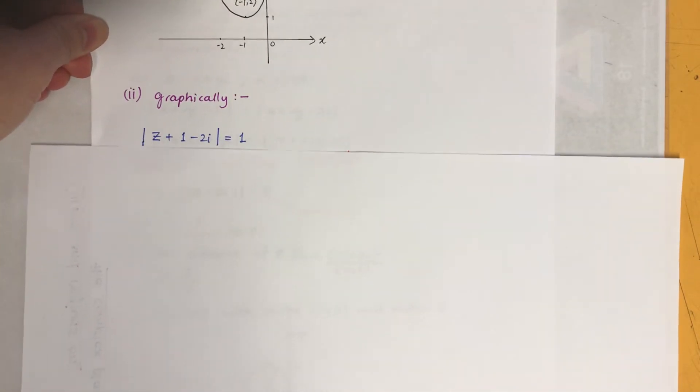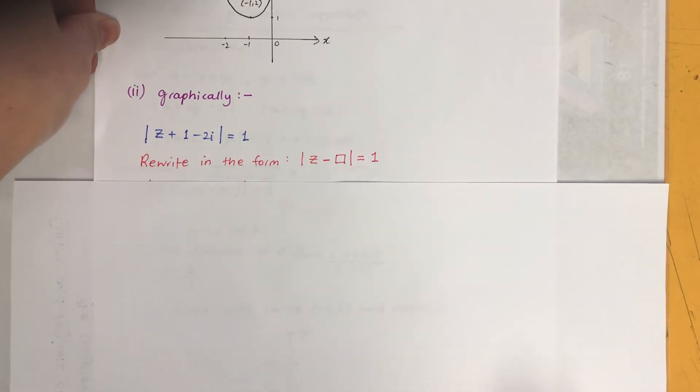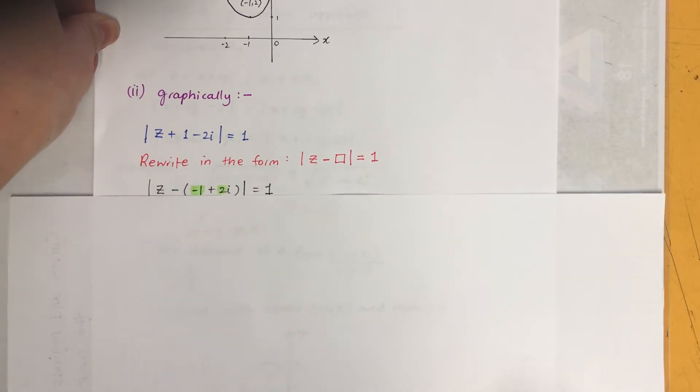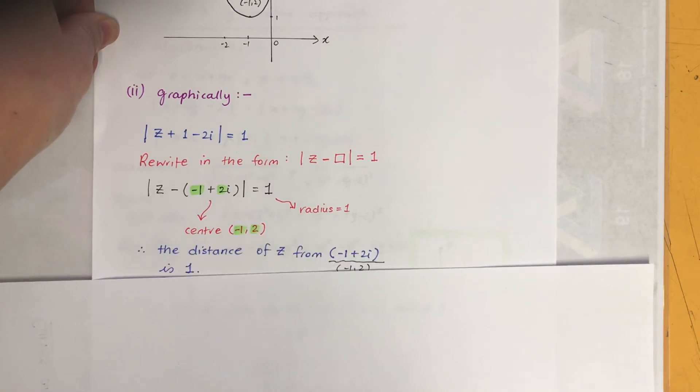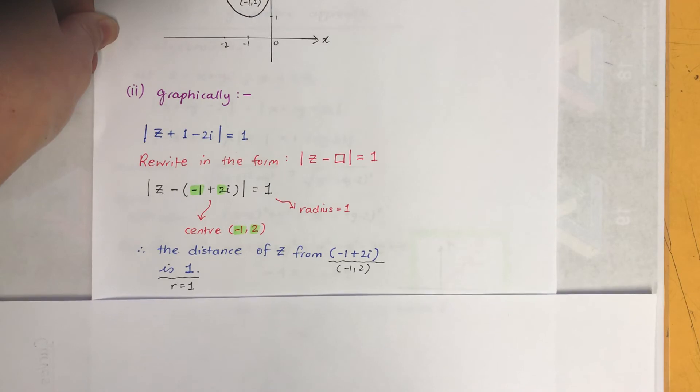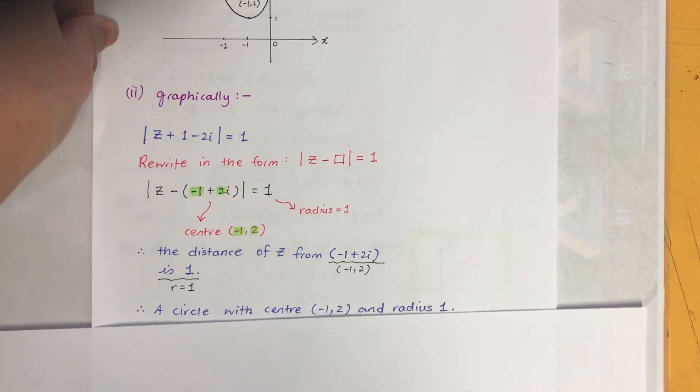Okay, so when you sketch it, make sure your graph is big enough and put all the necessary features. All right, so graphically now we need to know where the center is. To find out, we need to rewrite in the form of Z minus something, and absolute value equals 1. So what that means is the distance of Z from minus 1 plus 2i, which is on the number plane to be minus 1 and 2, the coordinates.